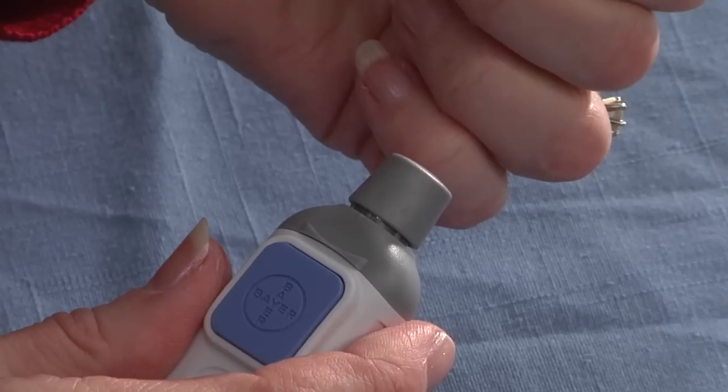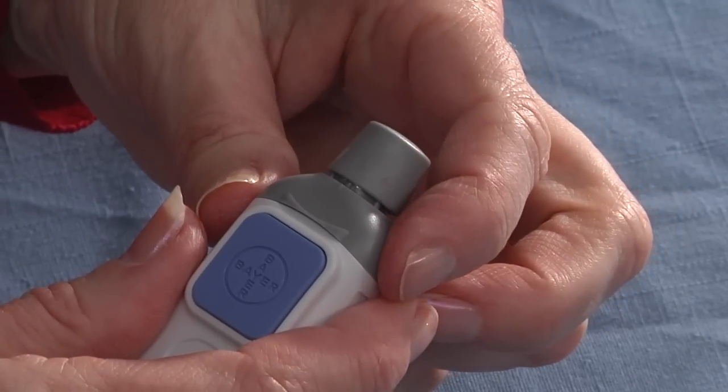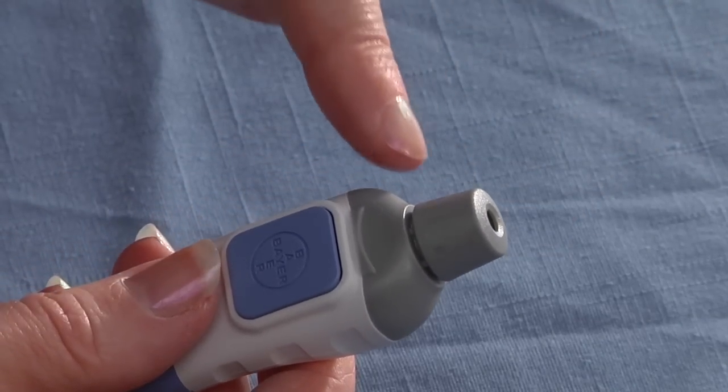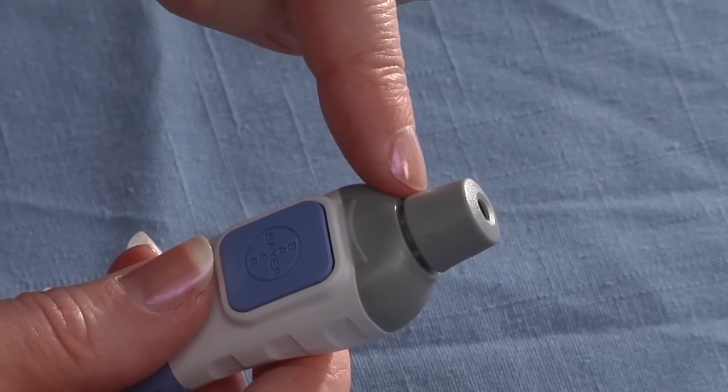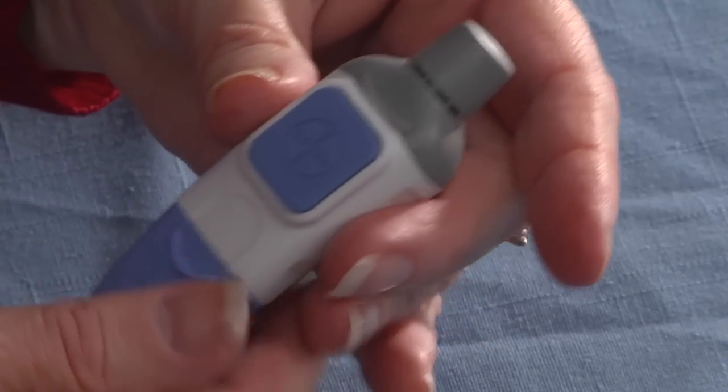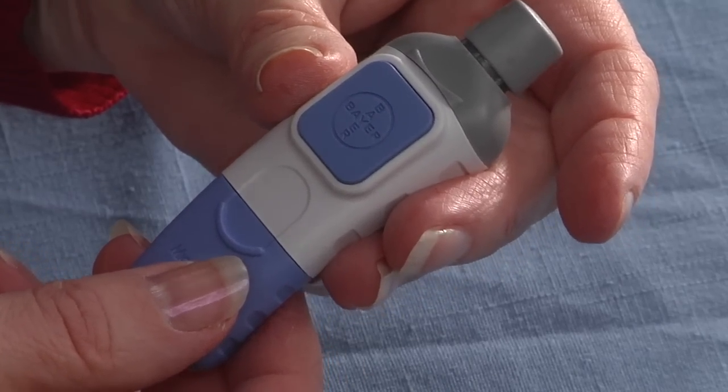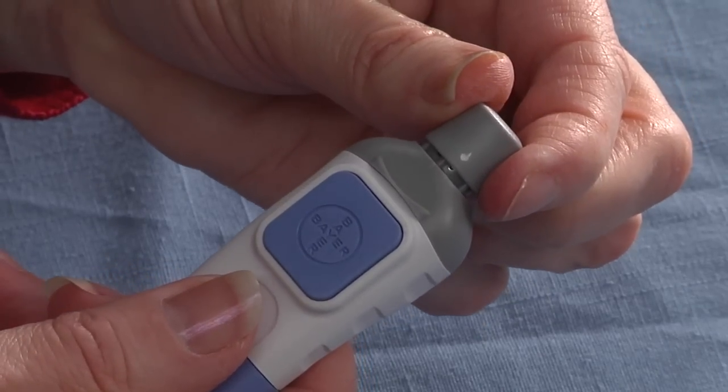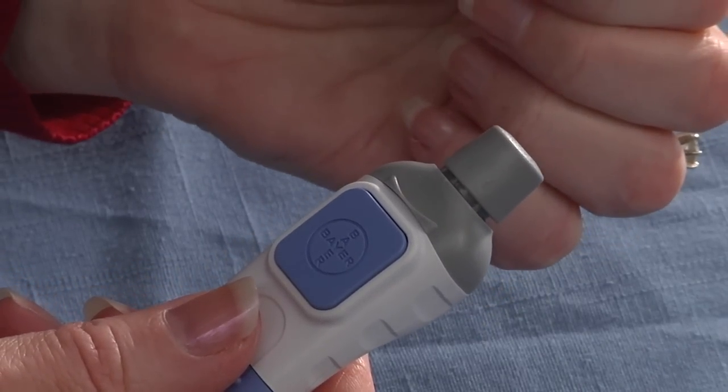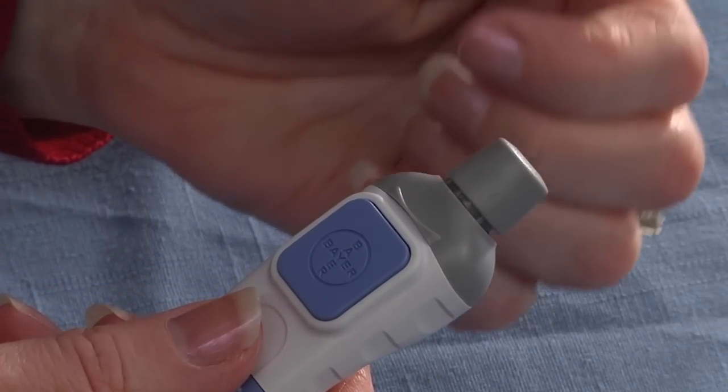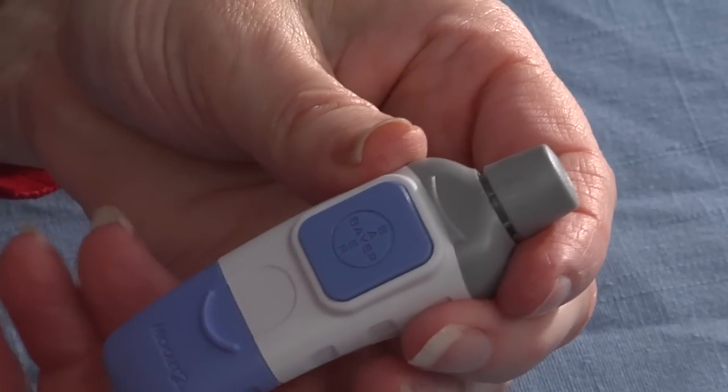The cap has different sizes of drops. Most lancet holders will either have dots or drops, or sometimes they're down here, or numbers. The larger the dot, number, or drop, the deeper that needle will go into your finger. So you want to turn this down to the lowest setting possible and still get a good drop of blood.